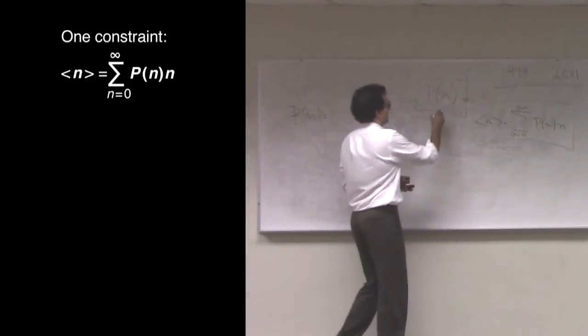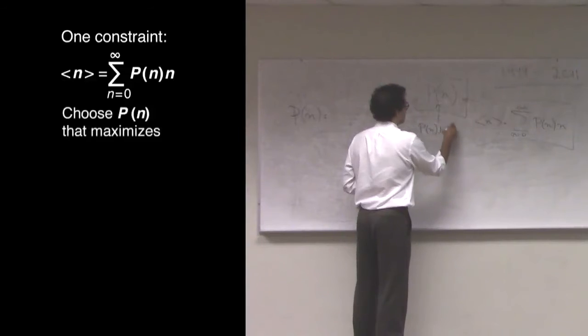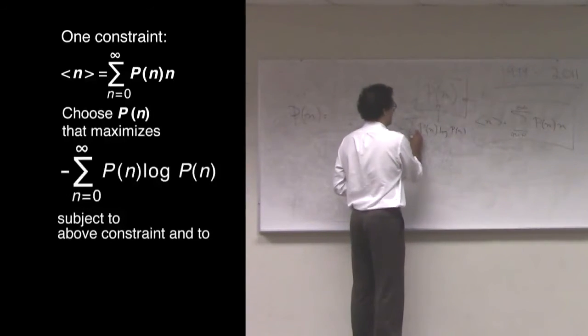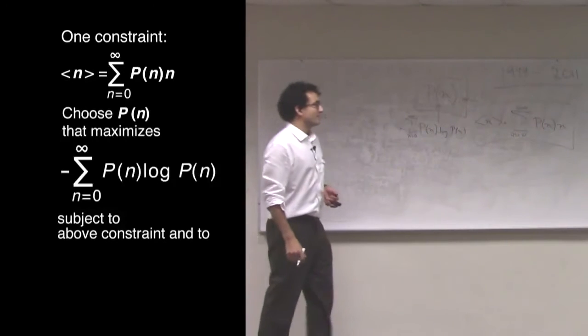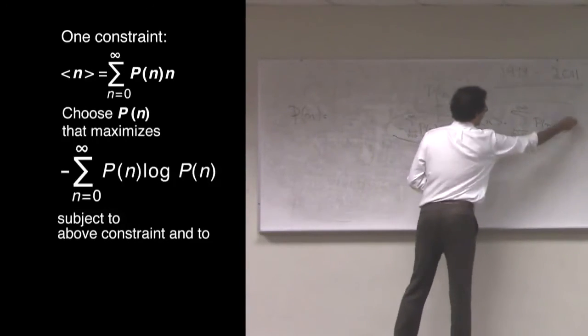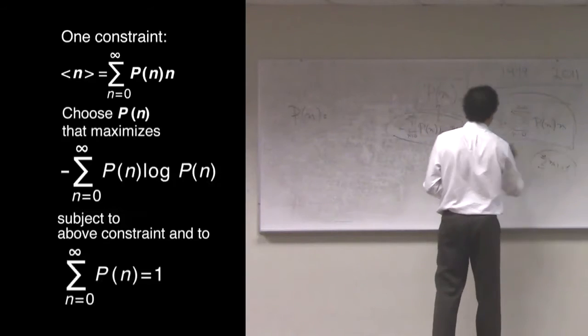And we're going to pick the probability distribution p of n that maximizes the entropy, p log p, negative sum n from zero to infinity of p log p. We're going to maximize this quantity, subject to this constraint, and of course, always subject to the normalization constraint, that sum p_n is equal to unity. So that's my other constraint.